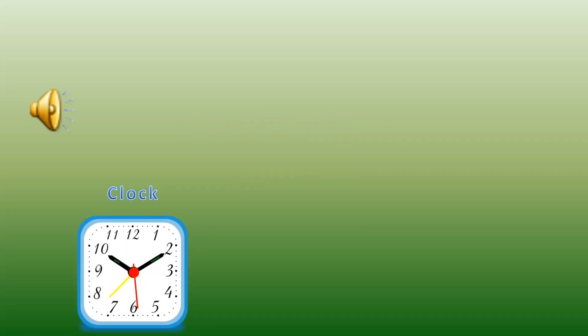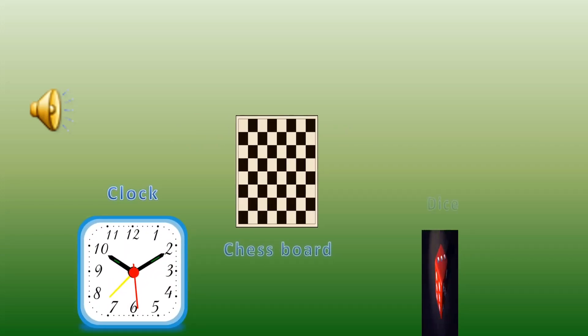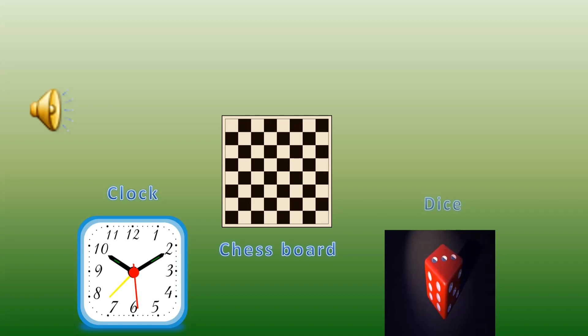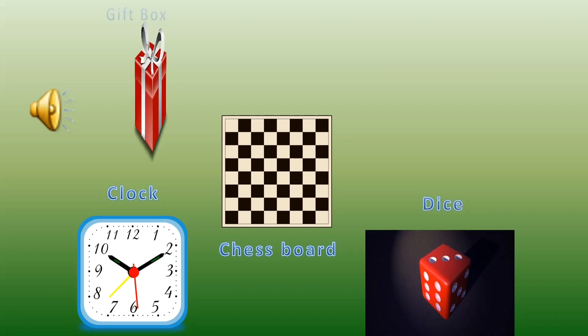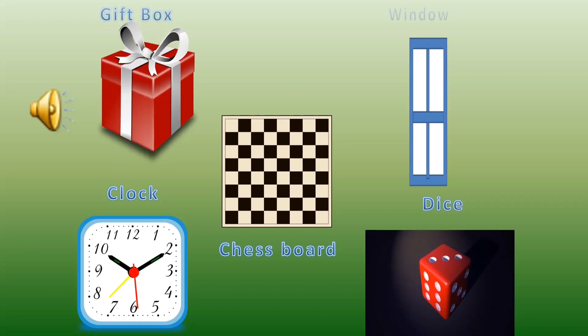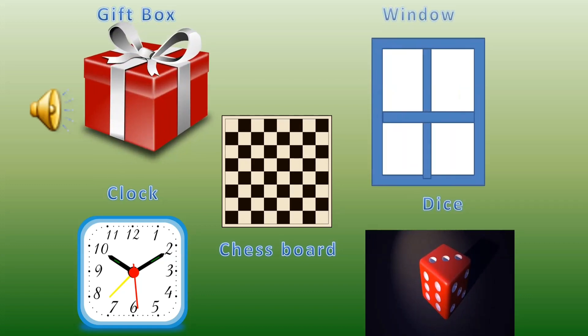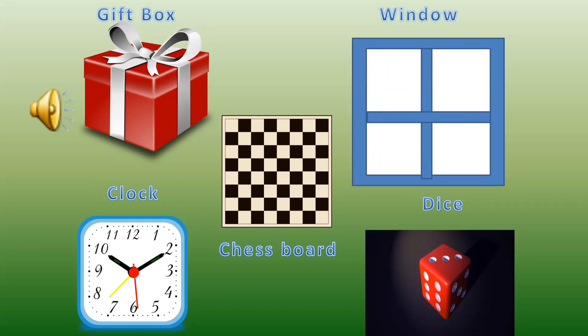Can we name the objects which are square in shape? Clock, chessboard, tiles, gift box, window. Very good.